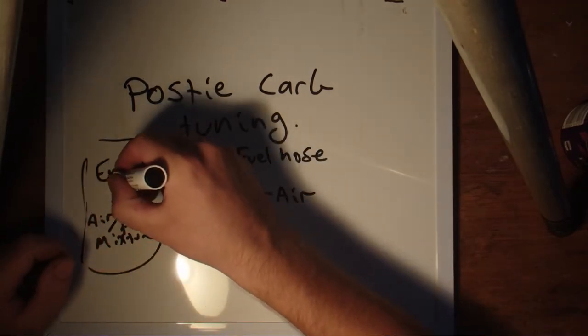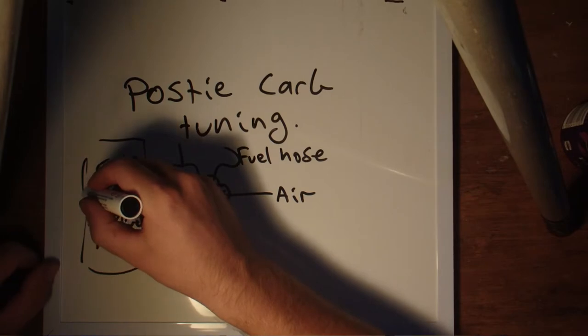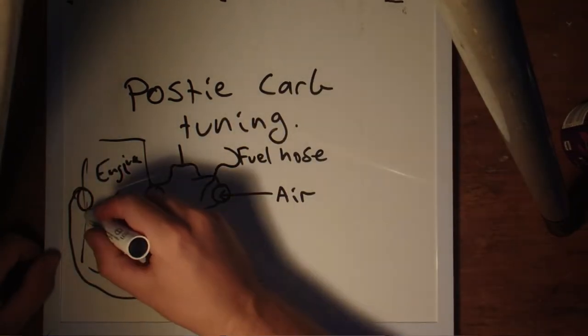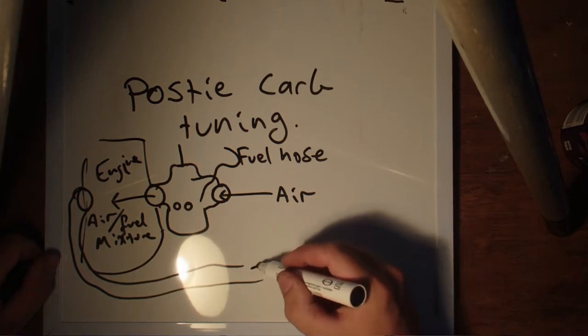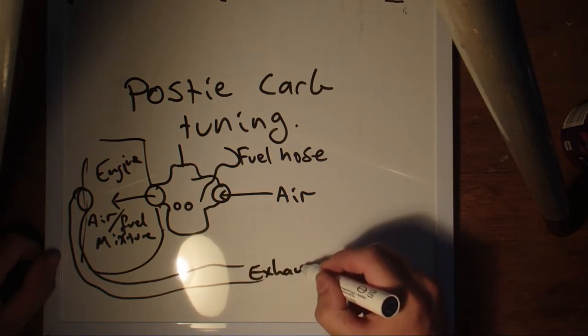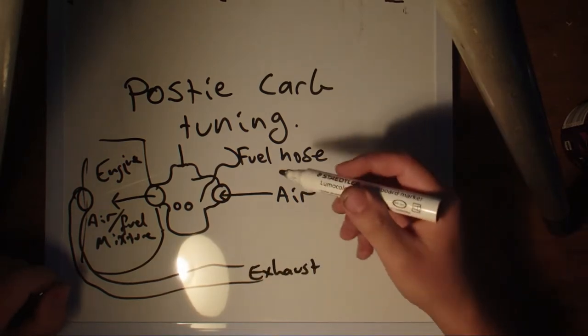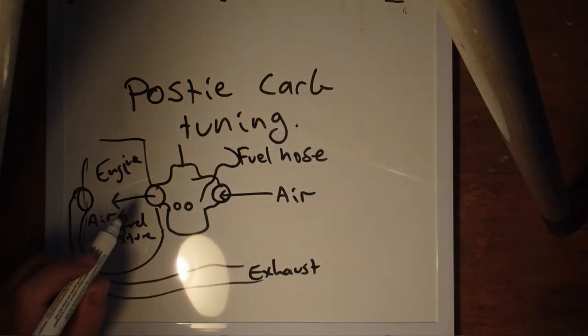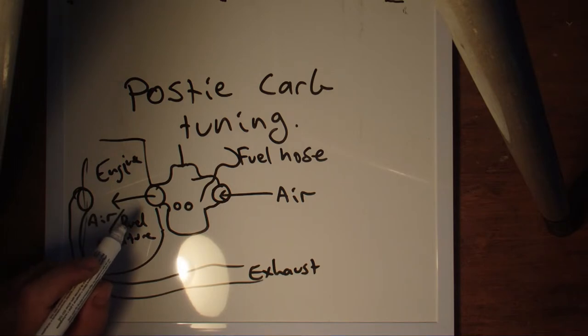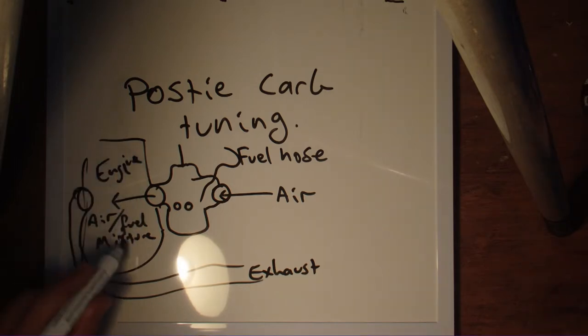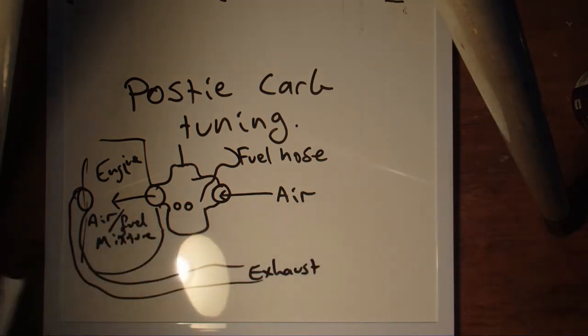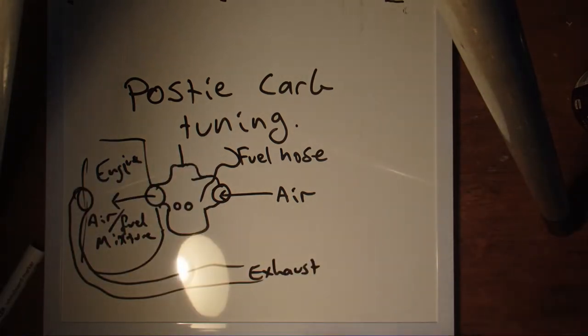And then on the other side of the engine you've got another little thing that comes out, and that's your exhaust. Controlling the carburetor allows us to control how the engine runs. They're quite simple but quite fascinating little gadgets.